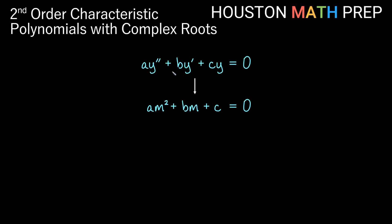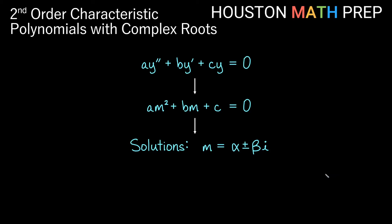We start with some equation that looks like ay double prime plus by prime plus cy equals zero. Remember a, b, and c are constants in this case. We look at the characteristic polynomial, which is am squared plus bm plus c — the same coefficients as the constant coefficients in our differential equation.